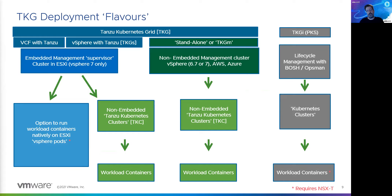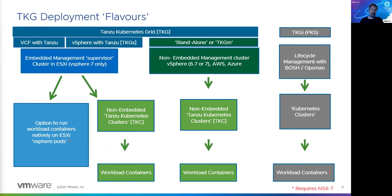In TKGS, you actually have two options. You can spawn a complete Kubernetes cluster — called Tanzu Kubernetes clusters, or TKCs — and run workloads in those. But in TKGS, which was the heart of Project Pacific, you can do something else: you can run pods natively, directly on ESX. Instead of having a dedicated Kubernetes cluster, your ESX hosts become the cluster, and you run workload pods directly on ESX.